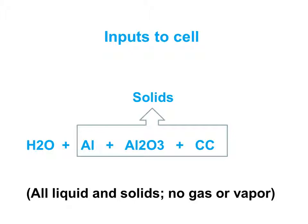Now it turns out that the inputs to the cell are all solids except for the water. The water is liquid, but everything else—the aluminum particles, the aluminum oxide, and the catalytic carbon—are all solids. In other words, there's no gas or vapor injected into the cell. That's good.